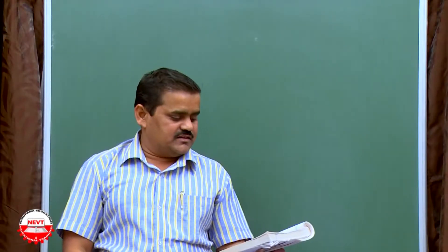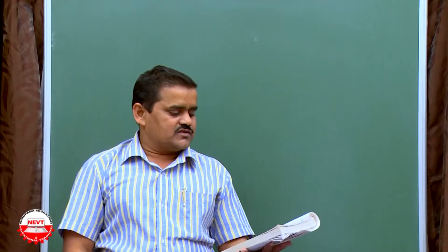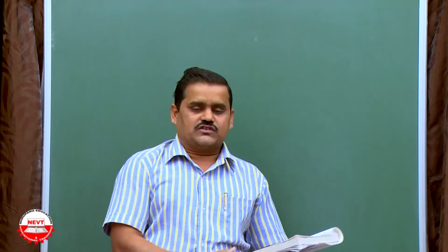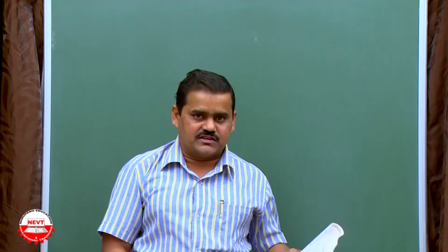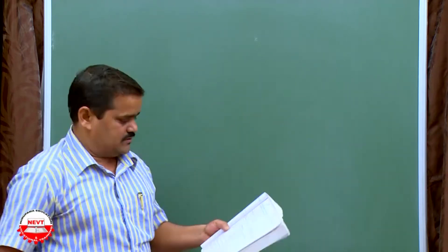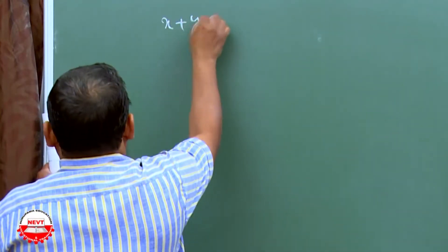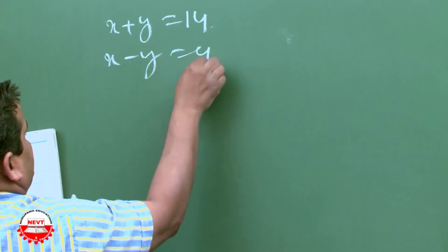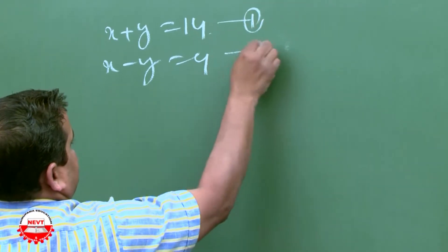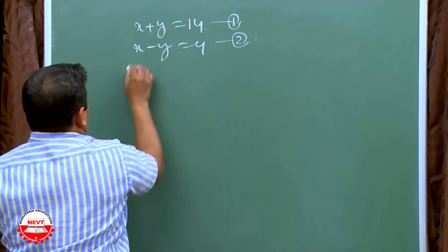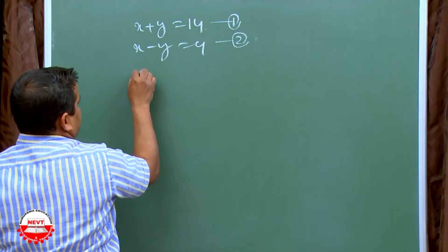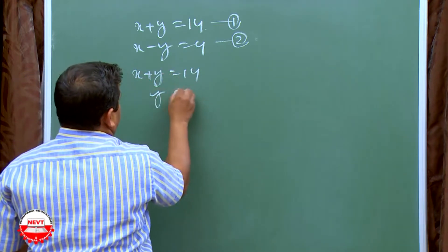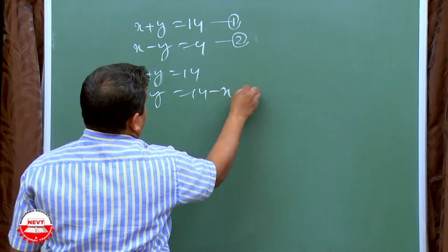Welcome to Exercise 3.3, Question 1: Solve the following pair of linear equations by the substitution method. We have already discussed the substitution method, but I will demonstrate it here. The equations are: X plus Y is equal to 14, which is equation 1, and X minus Y is equal to 4, which is equation 2. From equation 1, Y is equal to 14 minus X — this is equation 3.